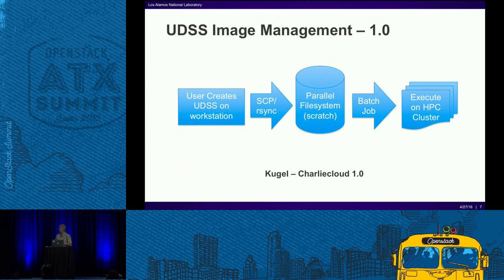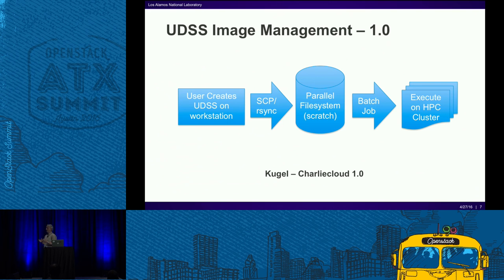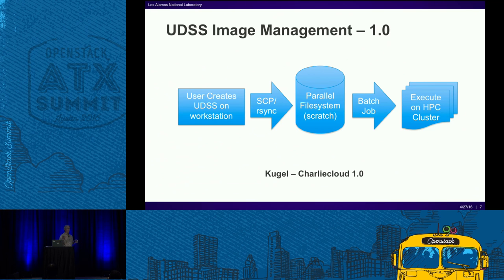Image management was one of the major problems with Charlie Cloud 1.0 and Kugel with virtual machines. Users were expected to create a virtual machine on their workstation, configure it for the cluster, then somehow get it into the cluster — which meant putting it on a parallel file system, SCPing and RSyncing between multiple hops through network gateways. These heavyweight VMs could be gigabytes in size. But once it landed on the parallel filesystem, Charlie Cloud's glue on the cluster could launch their image inside their allocation from a batch job.